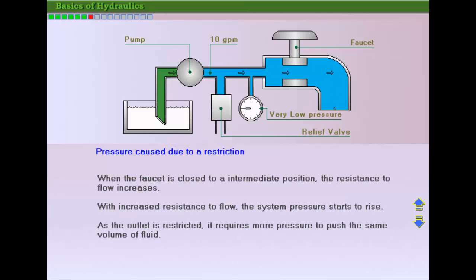As the faucet is closed to an intermediate position, the resistance to flow increases. With the increased resistance to flow, the system pressure starts to rise. This is shown by the pressure gauge.